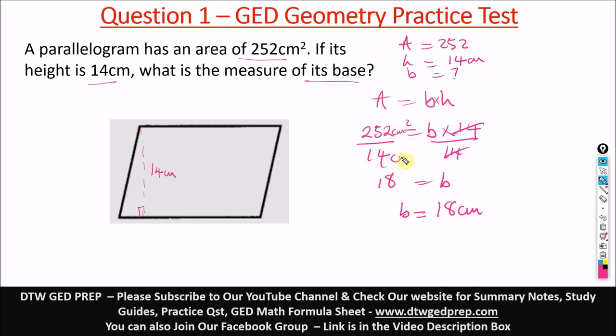Here we have centimeter squared and here we have centimeter, one centimeter will cancel out, we're left with one centimeter. That's why b equals 18 centimeters. So our base is 18 centimeters on this question.